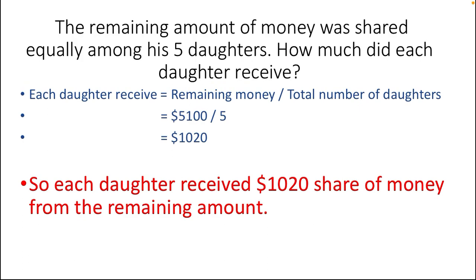Now the last statement, which gives us the final solution: the remaining amount of money was shared equally among his five daughters — how much did each daughter receive? We divide the remaining amount among five daughters. When you distribute a large amount so it becomes less, you use division. The formula is: each daughter receives equals remaining amount divided by total number of daughters, which is 5,100 dollars divided by 5, giving us 1,020 dollars. Each daughter receives 1,020 dollars.